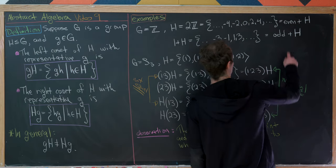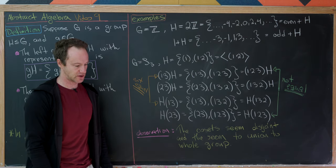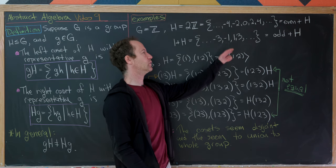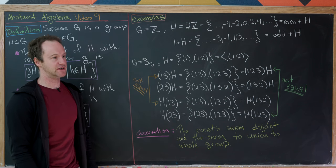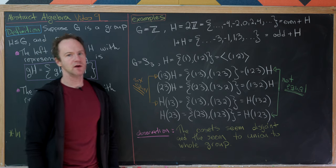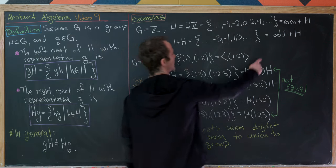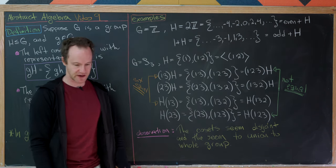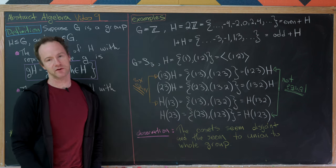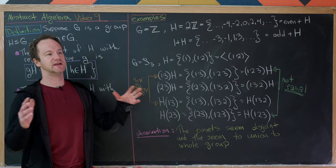Since if we add any even number to an element of H we land back in H, this is the coset connected to any even number. We use the plus symbol since addition is our operation. Also, 1 + H is the set containing everything in H plus 1, giving us −3, −1, 1, 3, and so forth — all odd numbers. So H is the subgroup of all even numbers, and its only coset is the odd numbers, which is no longer a subgroup.